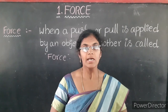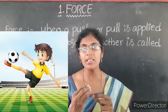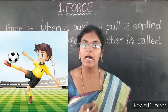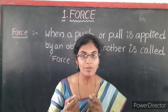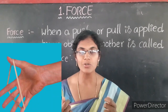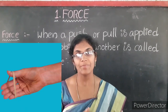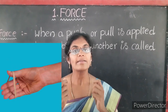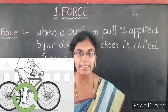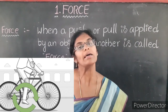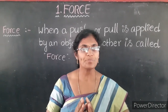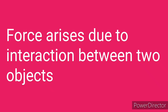One more point: when you kick the ball, your leg is applying the force and the ball is receiving the force. In the case of stretching a rubber band, your fingers are applying the force and the rubber band is receiving the force. When you are riding a bicycle, your legs are applying the force and the pedal is receiving the force. So, force arises due to the interaction between two objects.